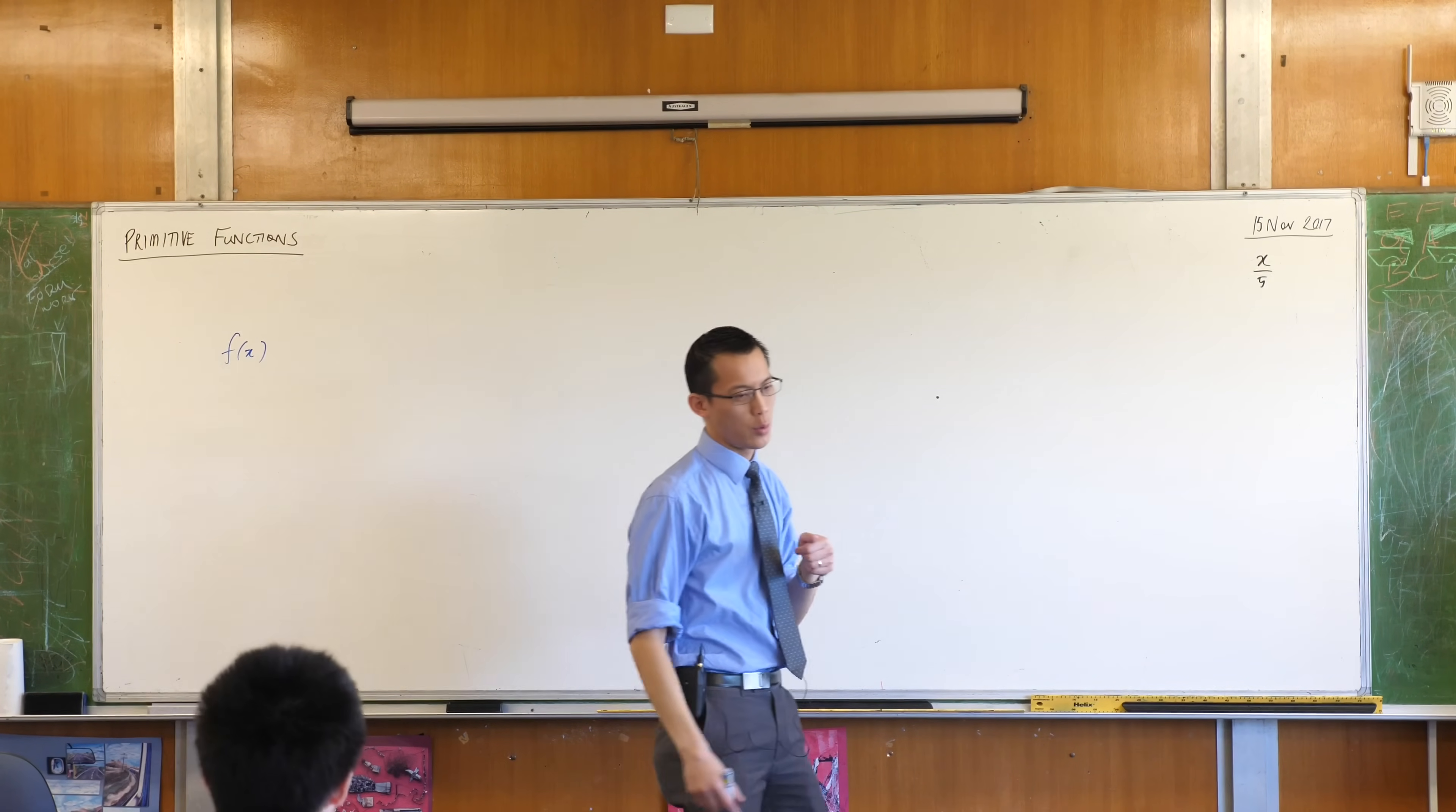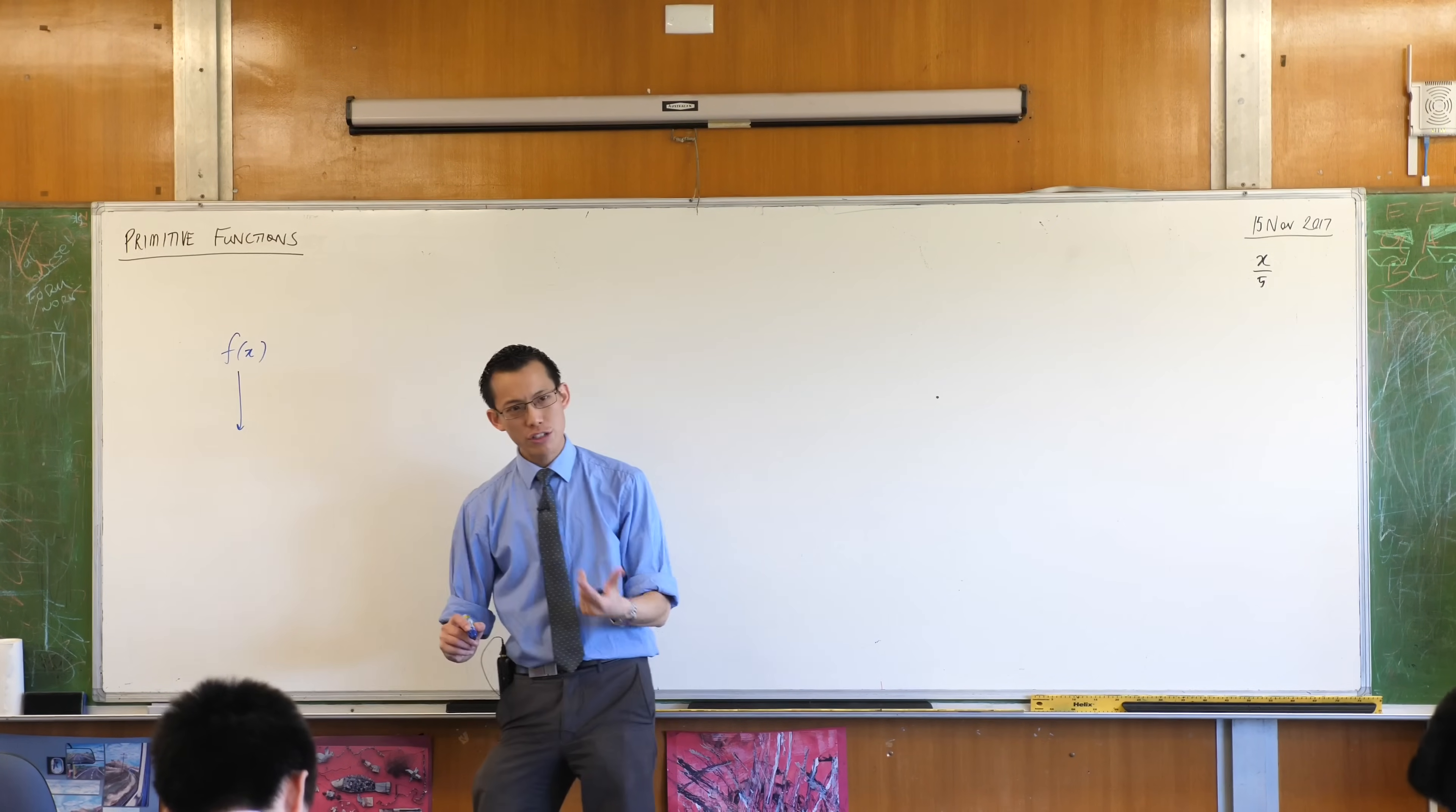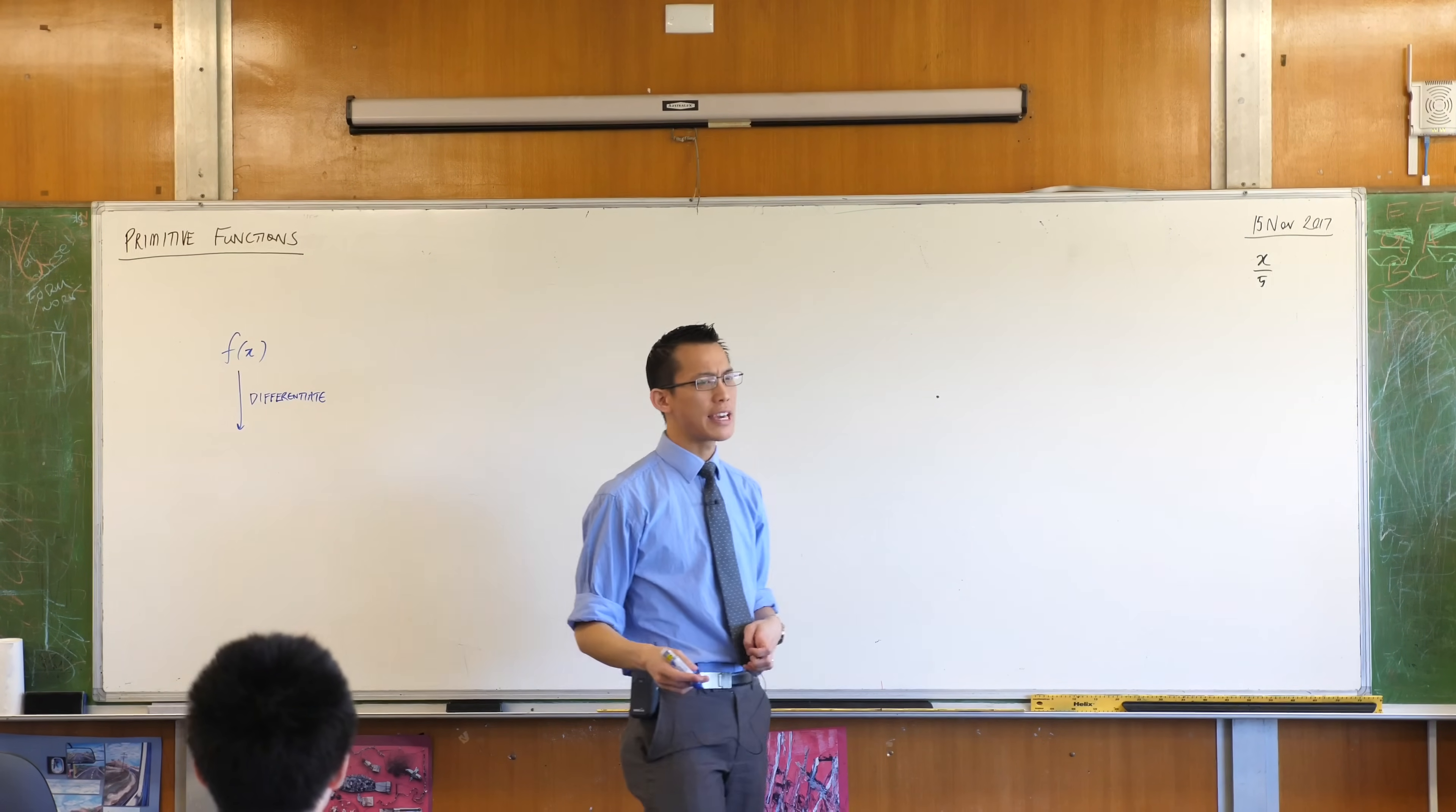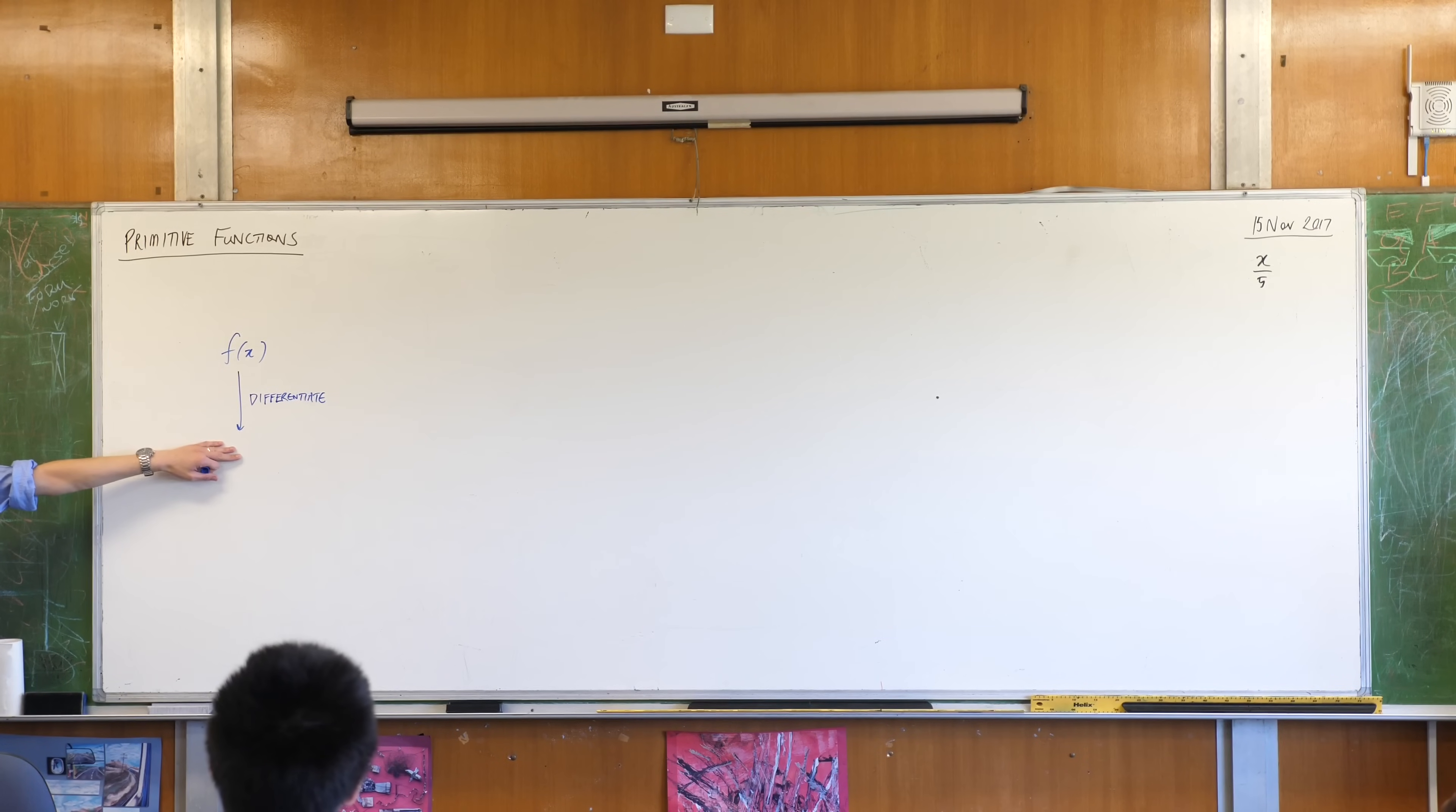In calculus, we've been talking about functions, that's kind of our main object, and we apply the process of differentiation to a function. When you differentiate, the object that you get out of that goes by a couple of different names. What kinds of names would you call it? You differentiate, and the result is...